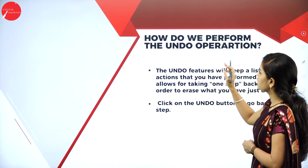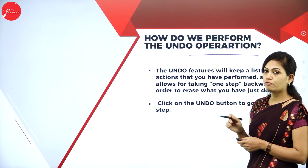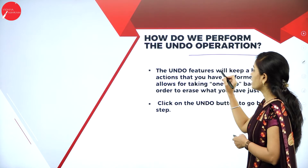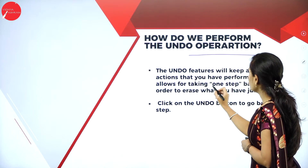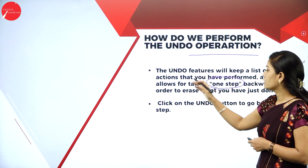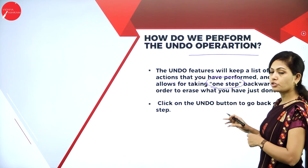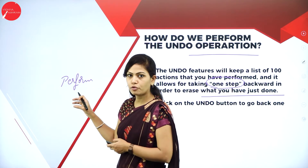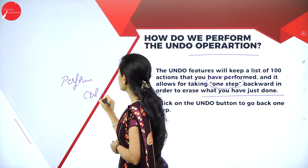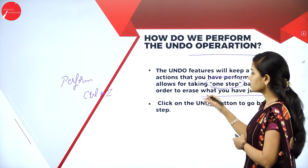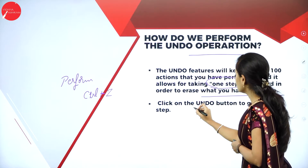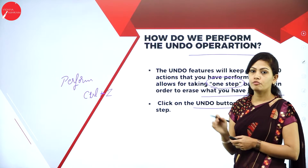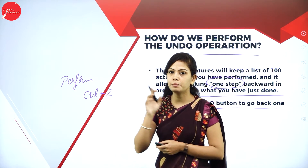Next: how do we perform the undo operation? The undo feature keeps a list of actions you have performed and allows you to take one step backward to erase what you have just done. If you want to get back a previous action, press Ctrl+Z. Clicking Ctrl+Z will bring back the previous state. This is the undo operation — Ctrl+Z is the keyboard shortcut for undo.